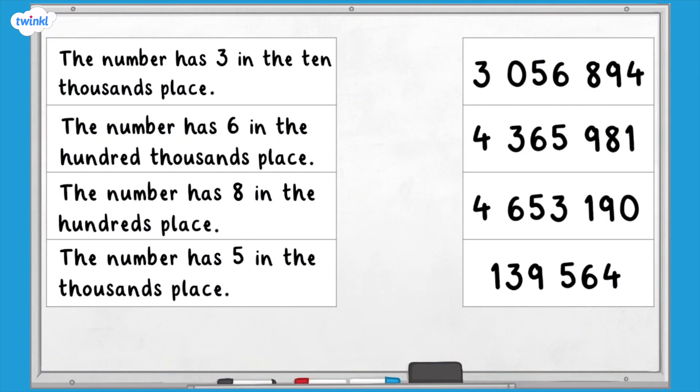Let's have a look. 139,564 has 3 in the 10,000s place. 4,653,190 has 6 in the 100,000s place. 3,056,894 has 8 in the 100s place. 4,365,981 has 5 in the 1,000s place.